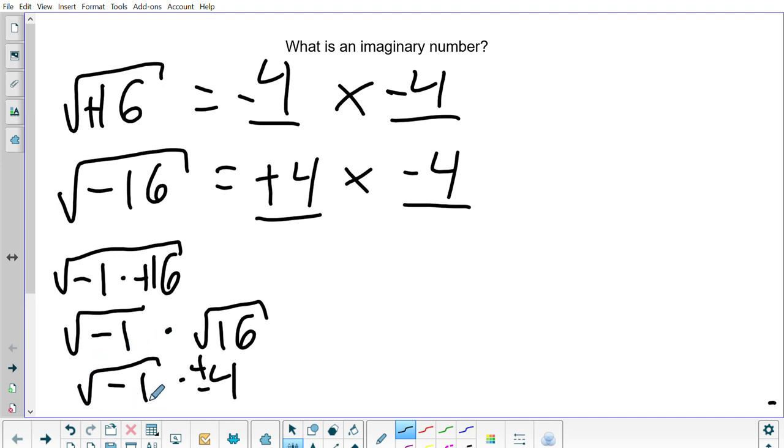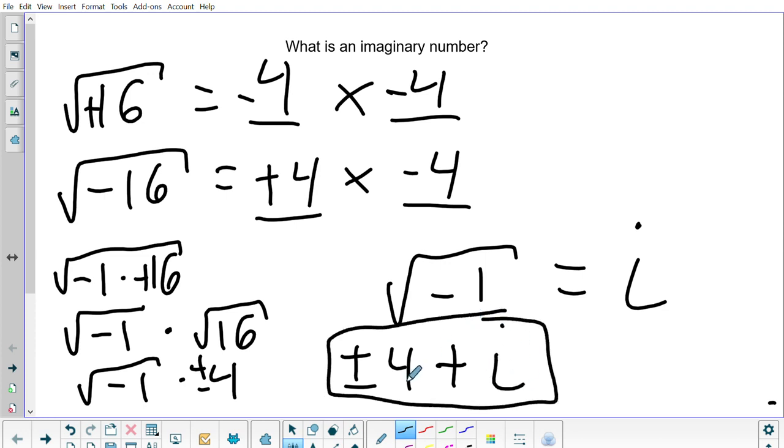This negative 1 square root cannot exist in our math world, so we say it's imaginary or i. And a common system that we have is that we take this negative 16 and we split it. So now we say it is plus or minus 4 times i. This together with a number and i is known as a complex system.